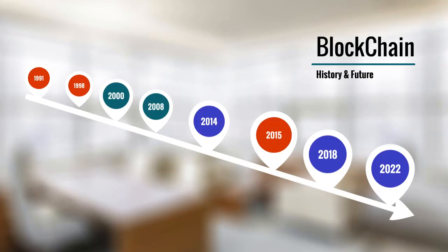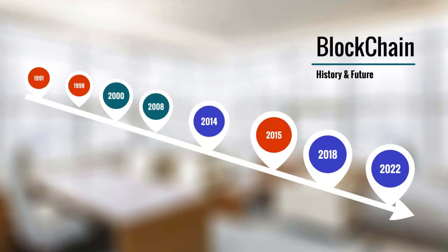Let's look at a timestamp chart which will give us a clear picture from the history to the future of blockchain. We have taken the timestamp from 1991 till 2022. The journey of blockchain from 1991 till 2018 spans blockchain 1.0, then blockchain 2.0, and currently we are living in the era of blockchain 3.0. We will also look at what the future holds in 2022, 2025, and 2030.